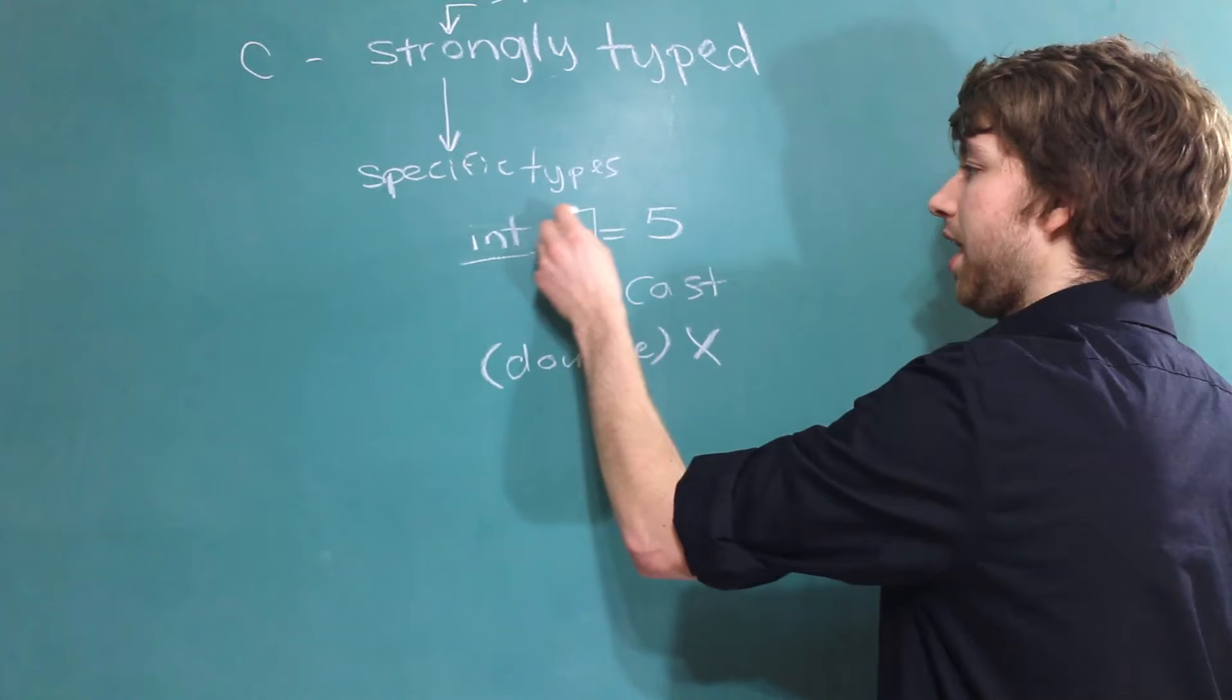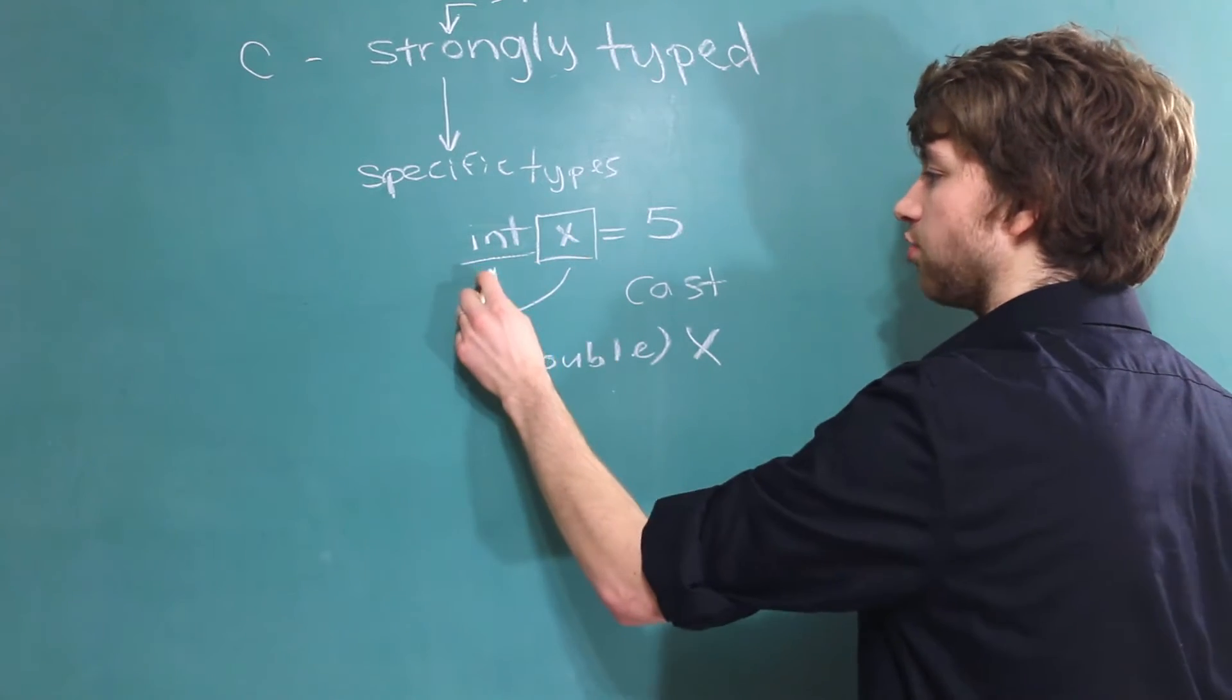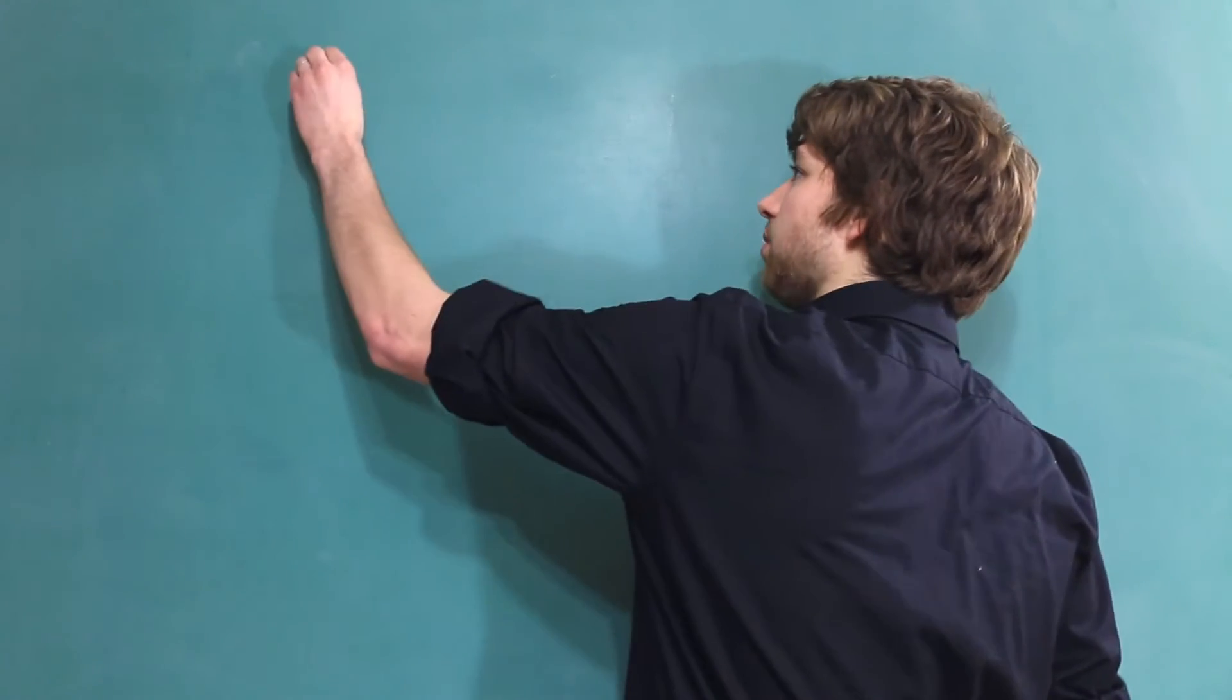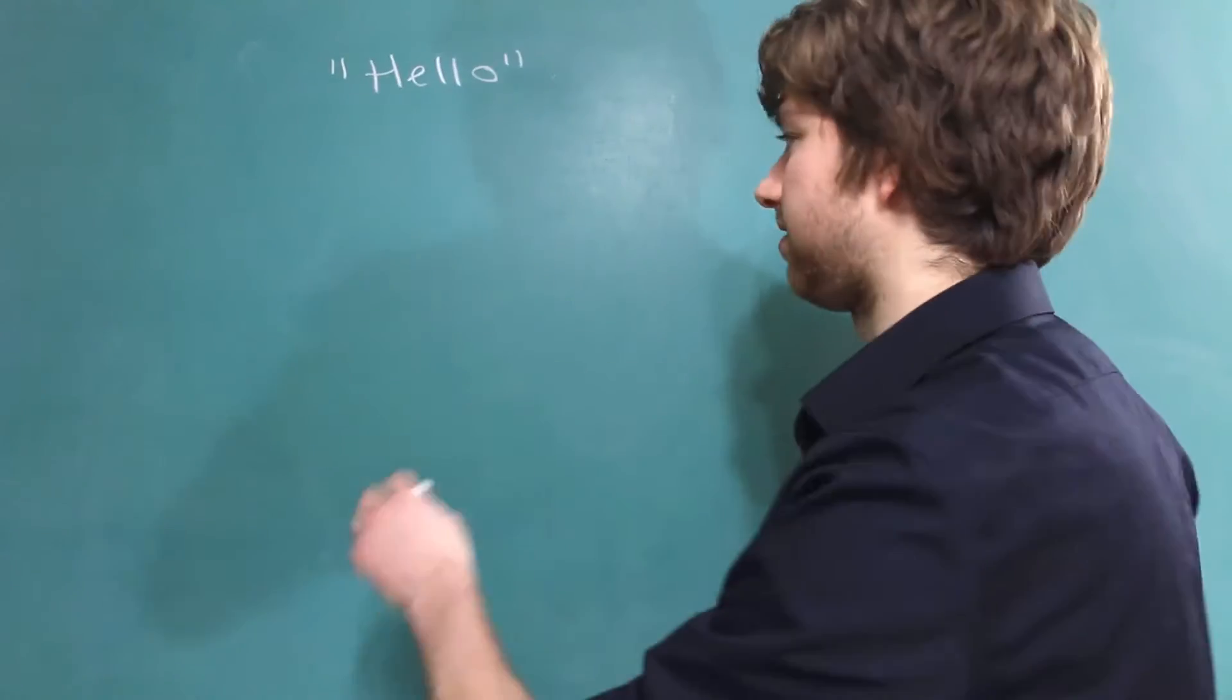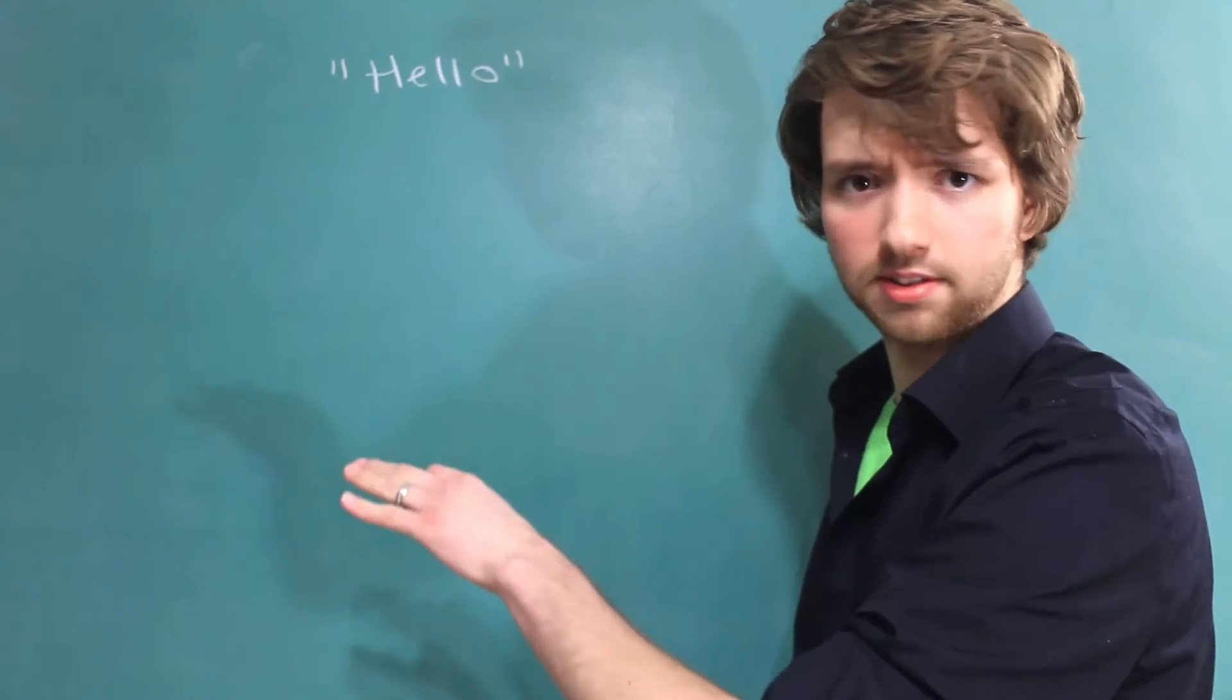But the actual variable x will always be an integer. To illustrate my point let's imagine that the only data type we have are strings. So a string is a sequence of characters such as hello.